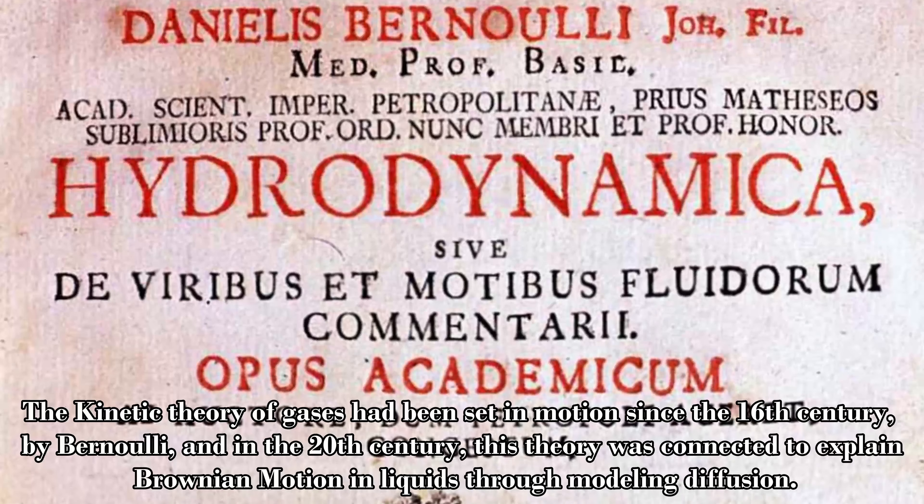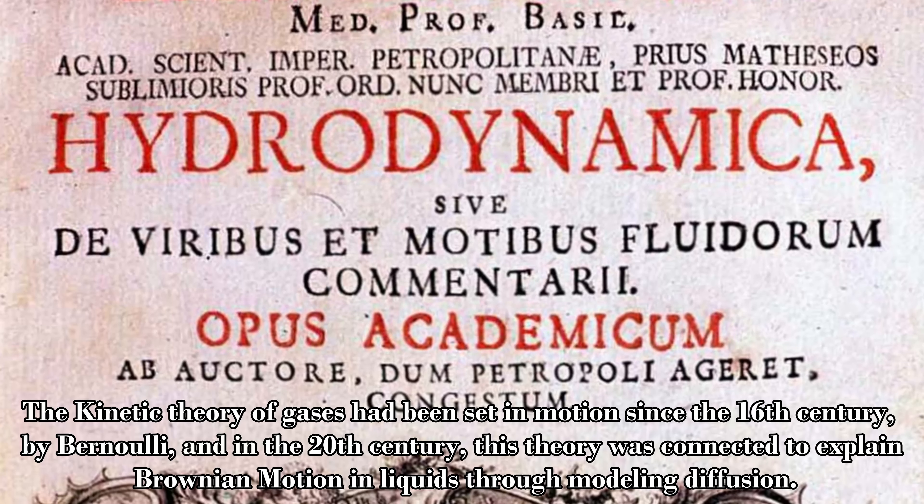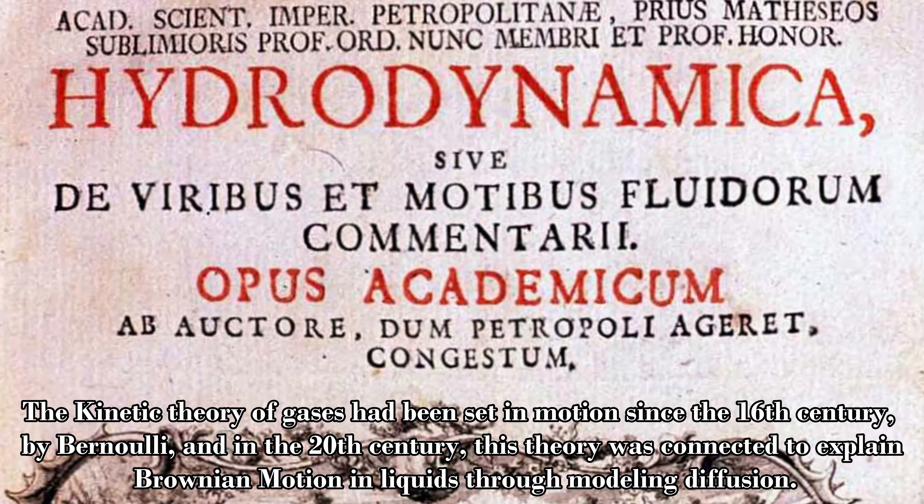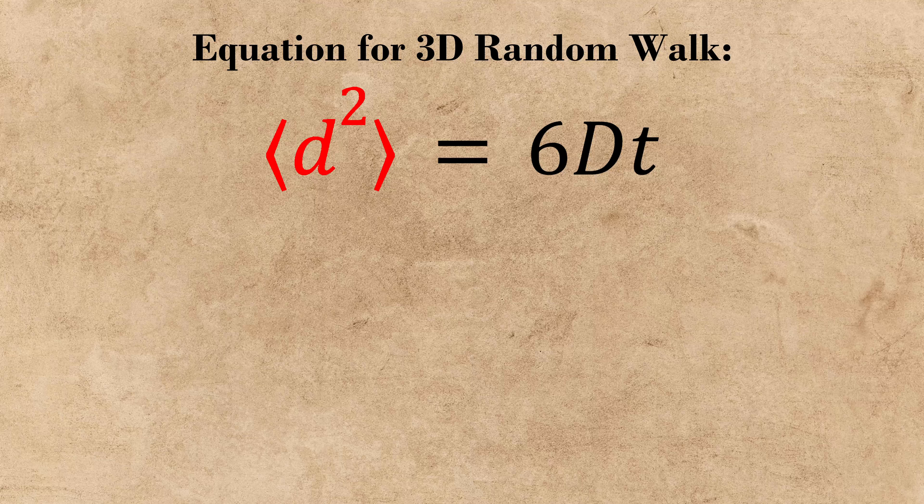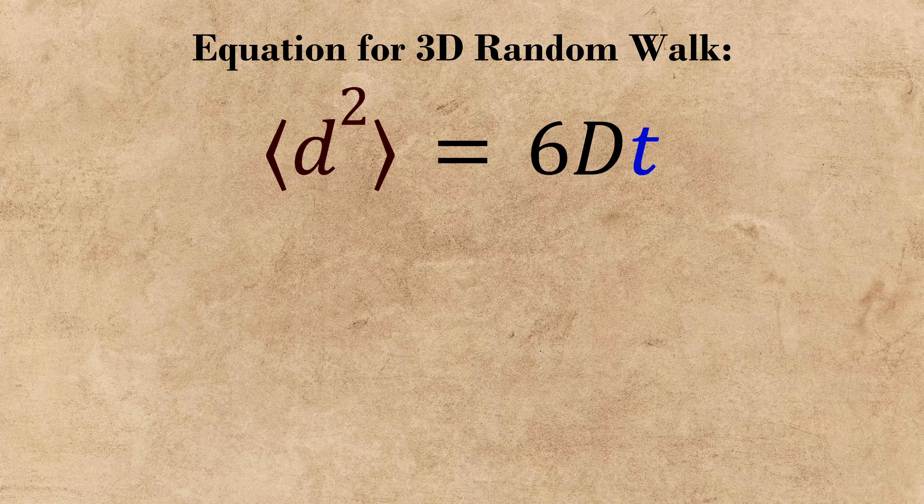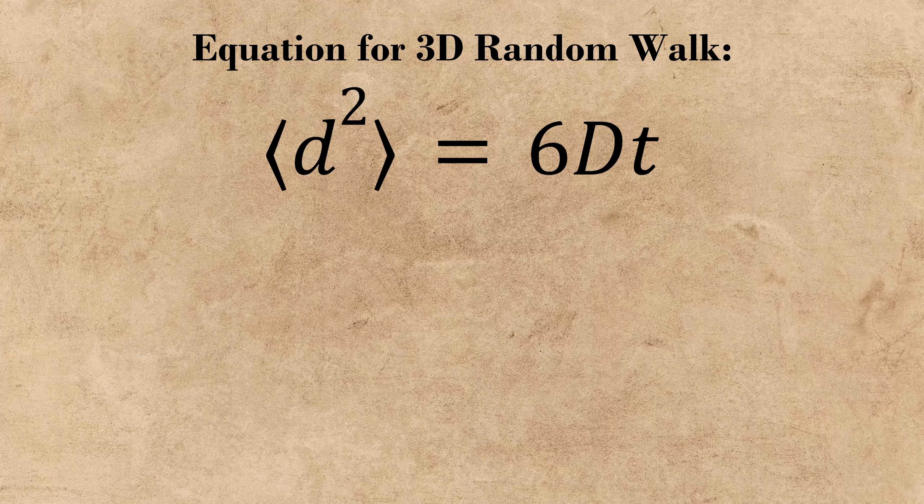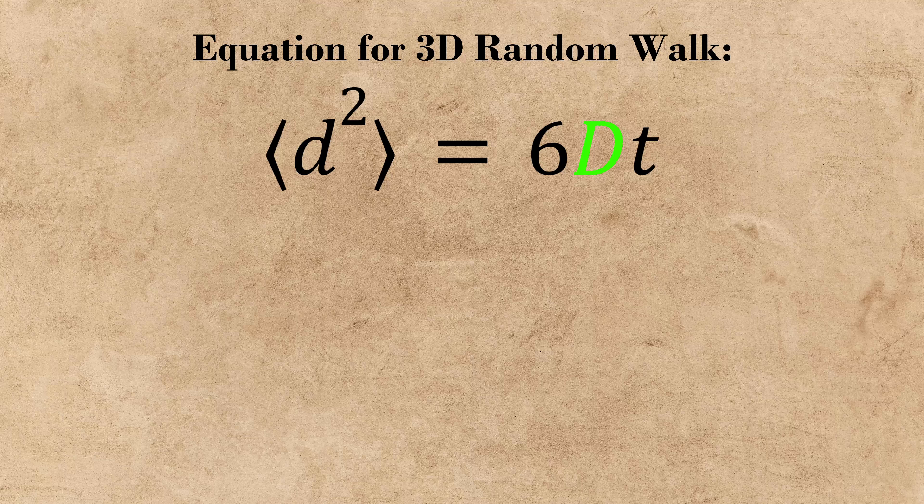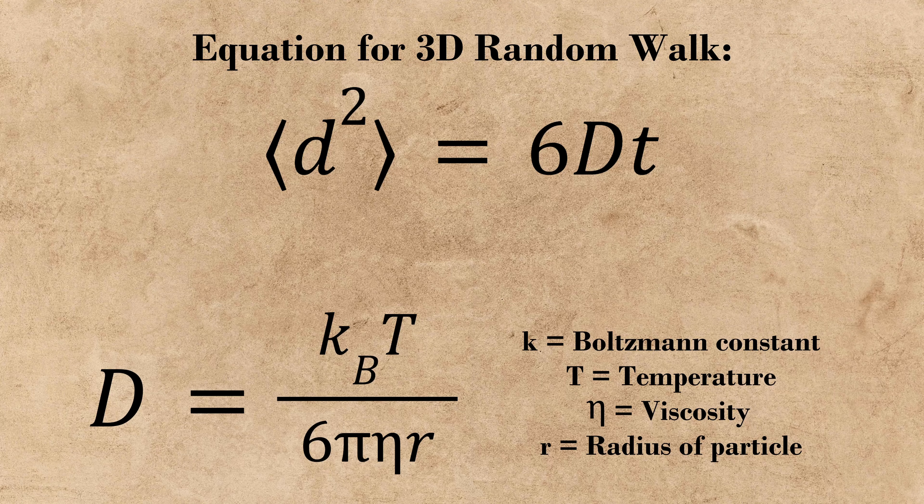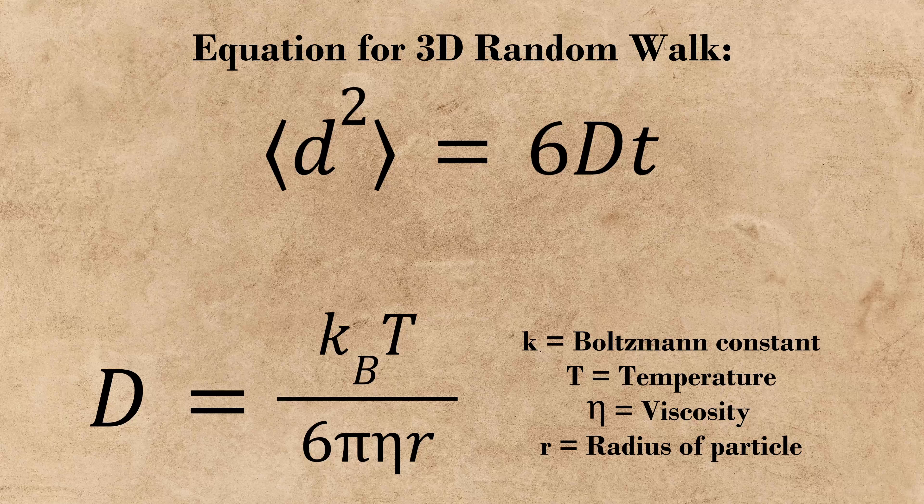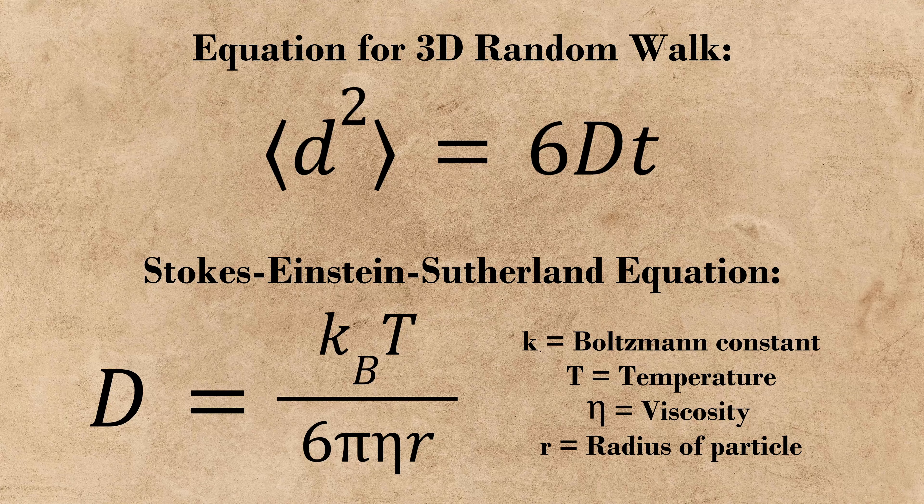Sutherland and Einstein suggested that the suspended particles obeyed the established gas laws of the time and proposed an equation that relates the amount of motion a suspended spherical particle undergoes to a time coefficient and also to what they called a diffusion coefficient. This equation that models diffusion of spherical particles through a liquid is known today as the Stokes-Einstein-Sutherland equation.